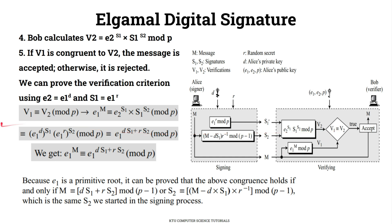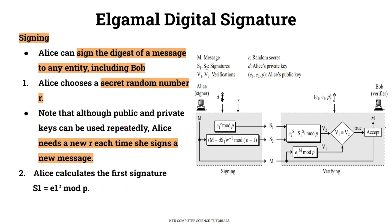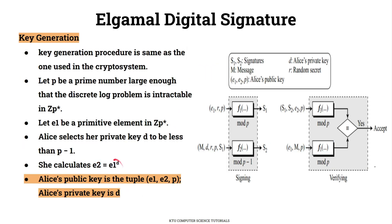Now, V1 equals E1 raised to M. V2 equals E2 raised to S1 times S1 raised to S2. Since E2 equals E1 raised to D, we can substitute E2 in the V2 expression. E2 raised to S1 becomes E1 raised to D times S1.